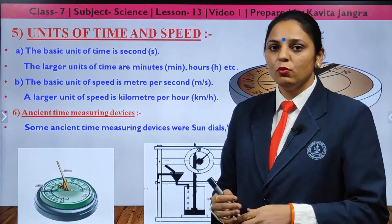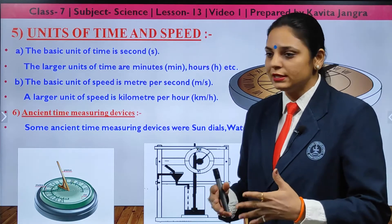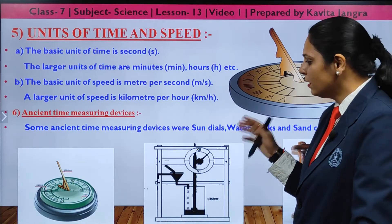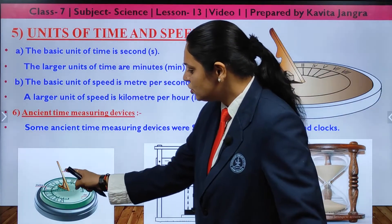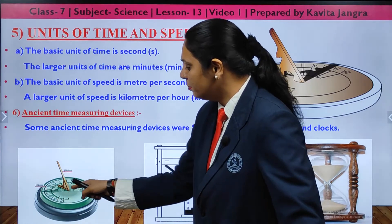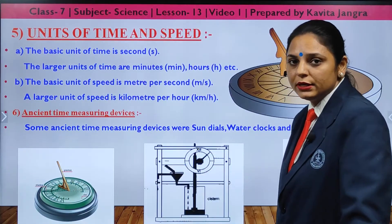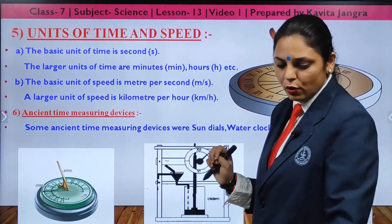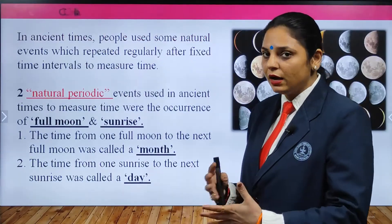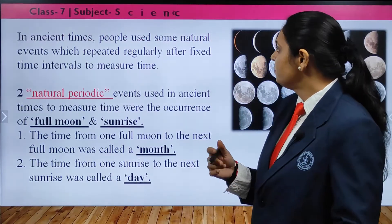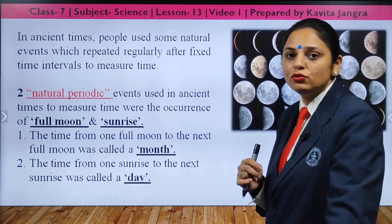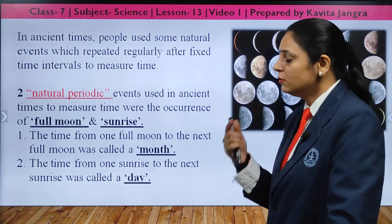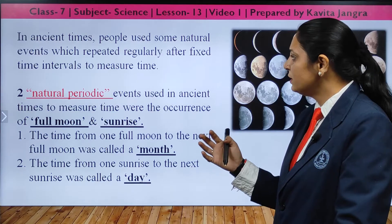In ancient times, various devices were used to measure time. The sundial uses the shadow of an angled rod falling on numbered markings to tell the time. There were also sand clocks and water clocks, used basically to count hour durations. Ancient people also tracked time through the movement and shape of the moon.